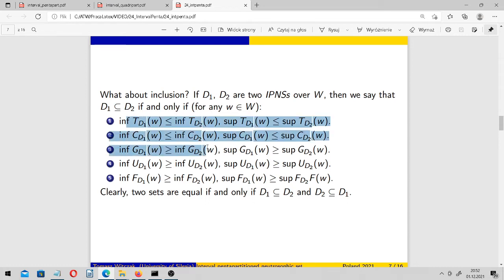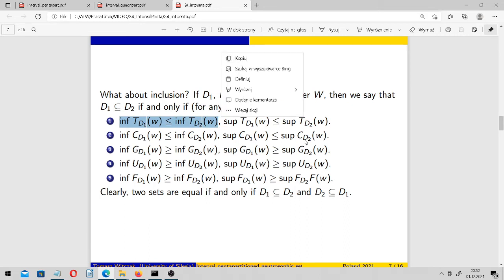So these are the conditions that, for example, the lower limit of truth interval of D1 should not exceed the lower limit of truth interval of D2, and so on.